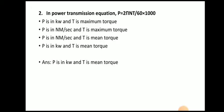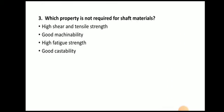Next question: in the power transmission equation P = 2πNT / (60 × 1000), P is in kilowatt and T is the mean torque. After calculating 2πNT divided by 60 into 1000, you will get the power in kilowatt, and T is nothing but the mean torque.